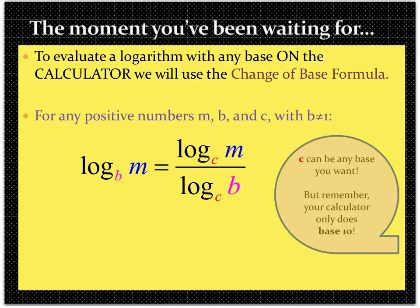Now, the change of base formula. The change of base formula allows me to take a log with some base B and change it to whatever base I want. This formula will allow me to change it to the common log so I can use my calculator. Before, when evaluating logs, we had to set the expression equal to x and solve. Now this lets me use my calculator because I can change the base to common log. Of course, C can be any base you want, but most of the time we'll change to base 10 to use our calculator.